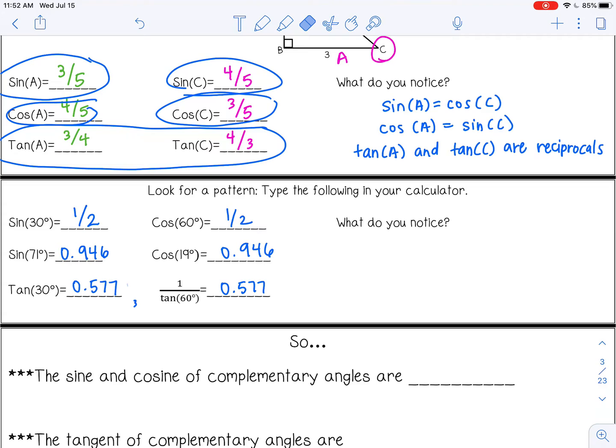Okay, so see if you notice any patterns. And this should be very easy. The patterns are all these are equal to each other. So the sine of 30 equals the cosine of 60. The sine of 71 is equal to the cosine of 19. They give you the same value. And then the tangent of 30 and 1 over the tangent of 60 gives us the same thing.